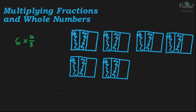So how many thirds do we have total? Let's count them up. Each of these contains two-thirds, so there's two of them, another two, another two, another two, another two, and another two. So we have two, four, six, eight, ten, twelve-thirds.